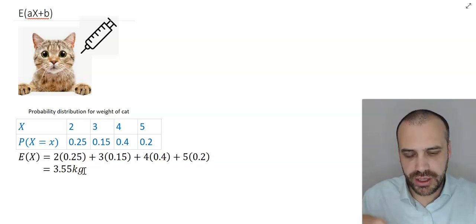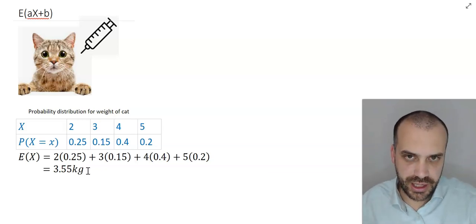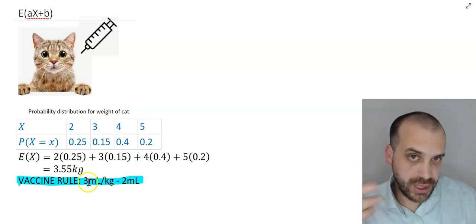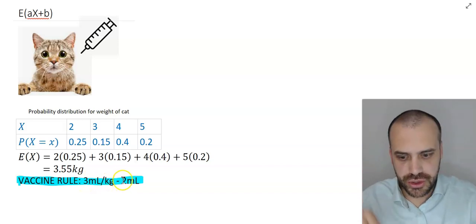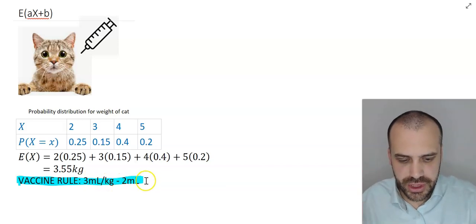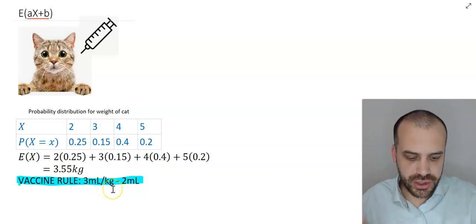Now from that we can calculate how much vaccine we're going to give this cat. So the rule for vaccinating cats is that for this particular vaccine, you give them 3 mils per kilogram that they weigh minus 2 milliliters. In other words, if we're going to write it algebraically, 3x minus 2.